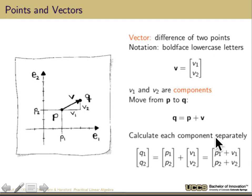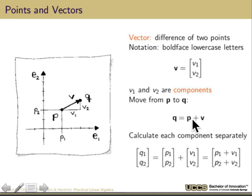What about vectors? A vector is really the difference of two points — that's the easiest way of thinking about how to get them. Our notation, as in the book, is bold-faced lowercase letters. So v is written as a column vector v1 and v2, which are the components. The idea of a vector is: if I add vector v to point p, it moves me to q. So v is an arrow that goes from point p — where the tail is — to point q, the head.